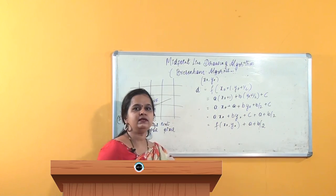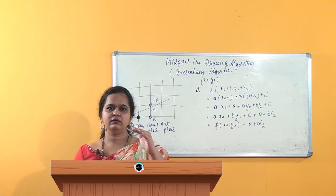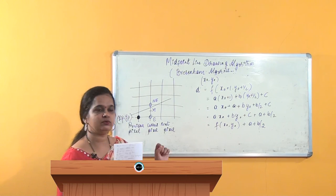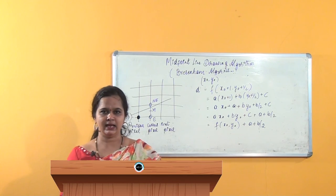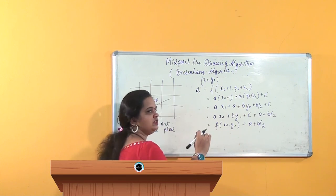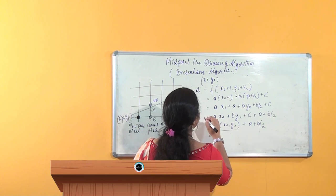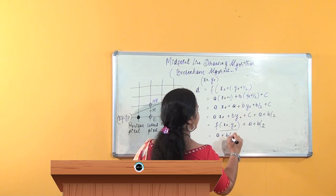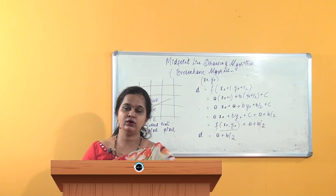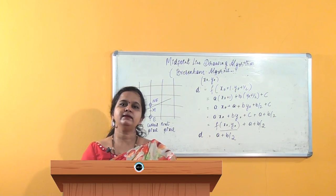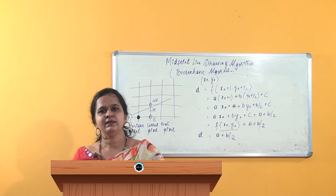Since (x0, y0) lies on the line, the equation of the line is 0 at that point — as discussed in part one, f = 0 on the line. Therefore f(x0, y0) = 0, and the initial decision variable d = a + b/2. This is the initial decision variable we will use when writing the algorithm, which we will see in the next part. Thank you.